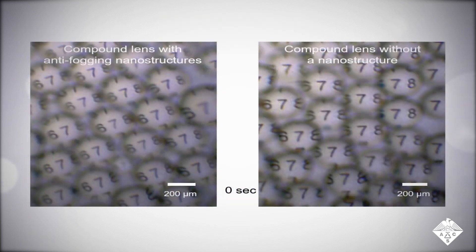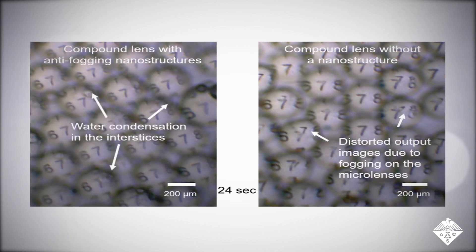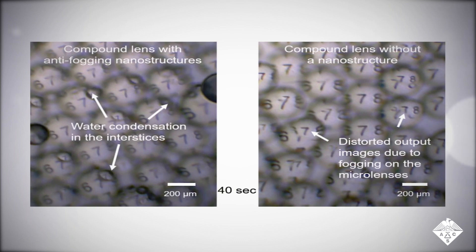Also like mosquito eyes, the compound lens had anti-fogging properties. Nanostructures on the microlenses caused water to collect in spaces between the lenses, making images appear less distorted than those from compound lenses without the nanostructures.